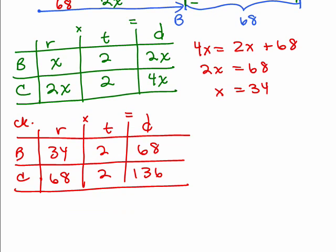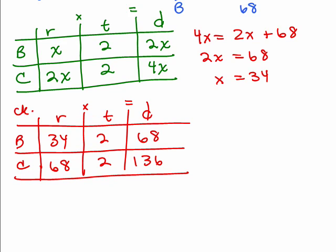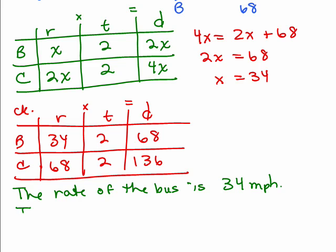All right. So, that's what it wants to know. The rate of the bus is 34 miles per hour. The rate of the car is 68 miles per hour.